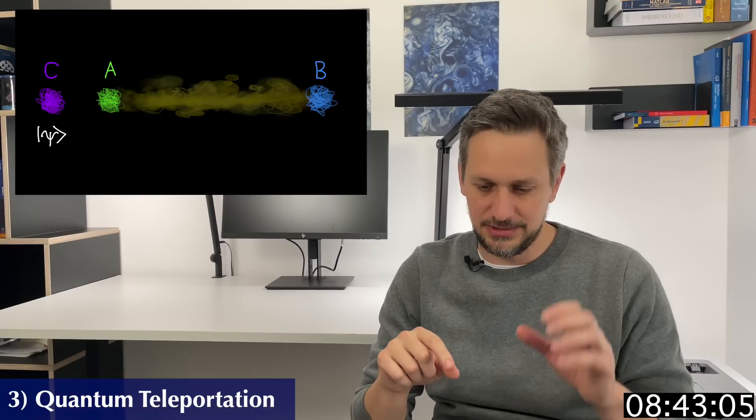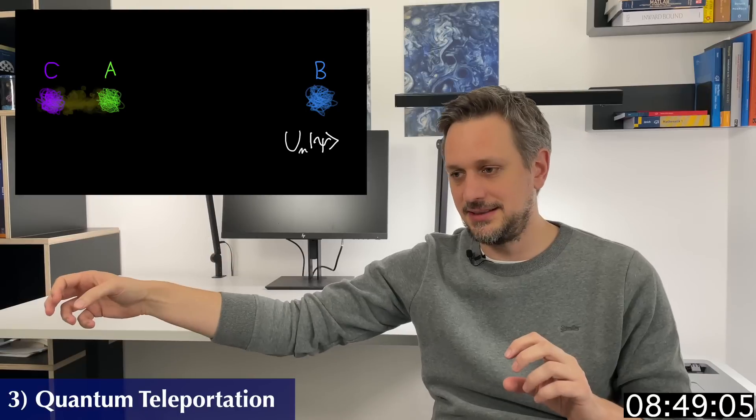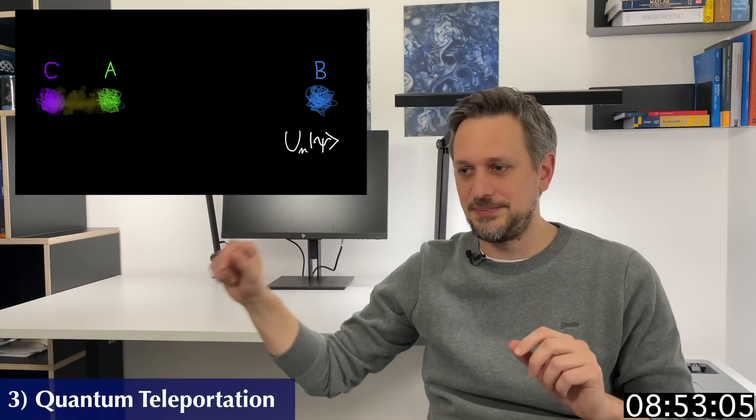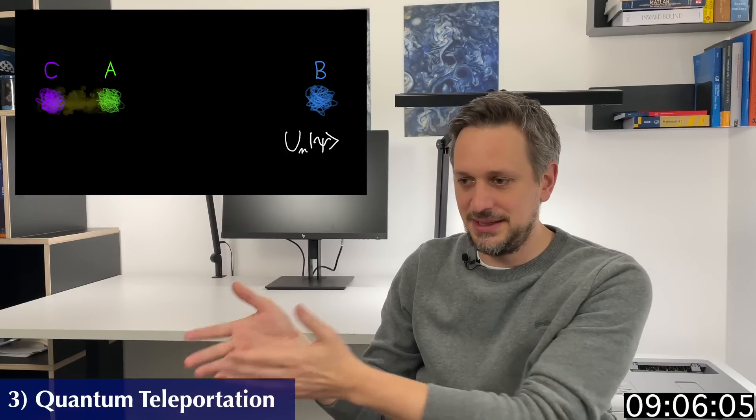The original quantum state, which was in particle C, disappears at the time of the bell measurement and reappears in, at least in a modified form, at the receiver. Also the carriers themselves are indistinguishable by nature. So you cannot really teleport two photons or two electrons from another. Which means you have the appearance of the perfect copy of what used to be at C and the original disappears. It's kind of like teleportation.